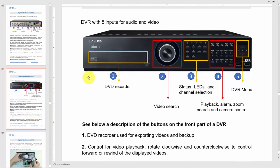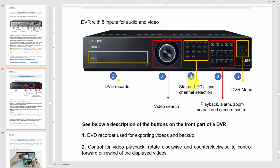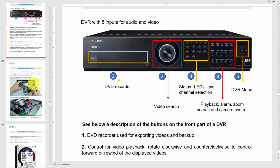Looking at the front of the DVR: there's a DVD recorder, though it's no longer very useful since you can store videos on a USB thumb drive instead. There are controls for video search and playback, status LEDs so you can monitor each channel, and buttons for playback, alarm, zoom, search, and camera controls. The DVR menu button lets you access and configure all settings on your monitor.